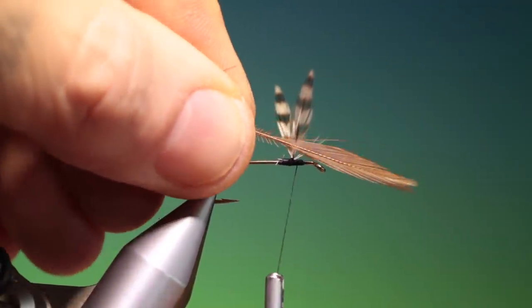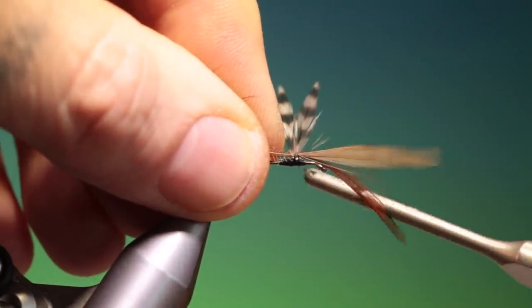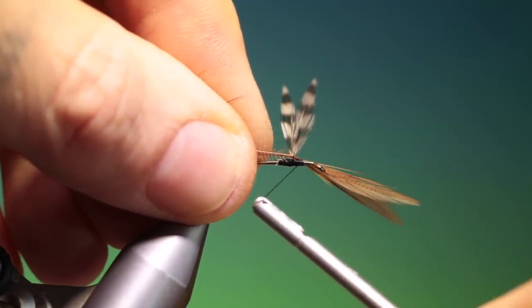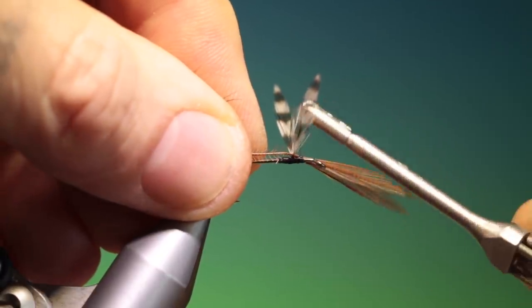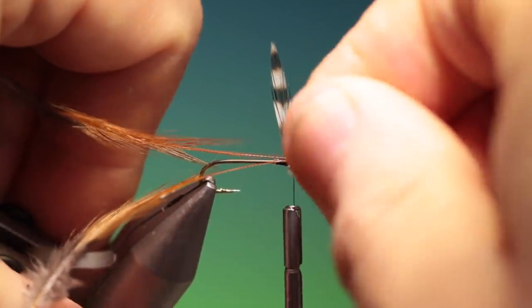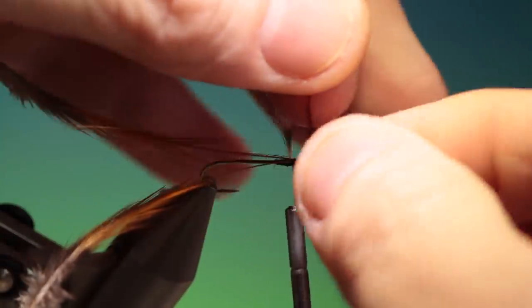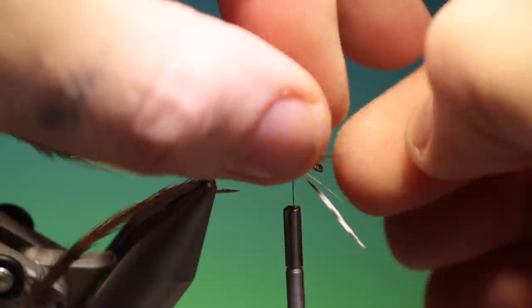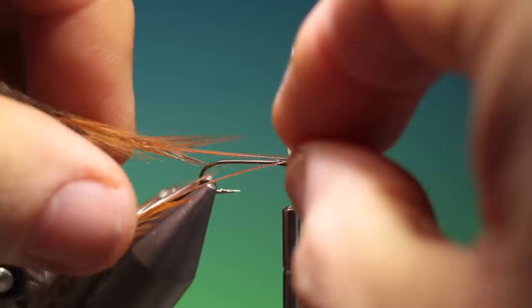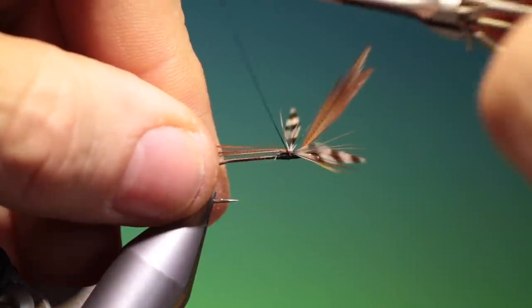I've done the same with two brown hackle tips. Tie these in, in front of the grizzle wings. And these want to go more up. We can just place those with our nail. That'll do there, just go back and secure them.